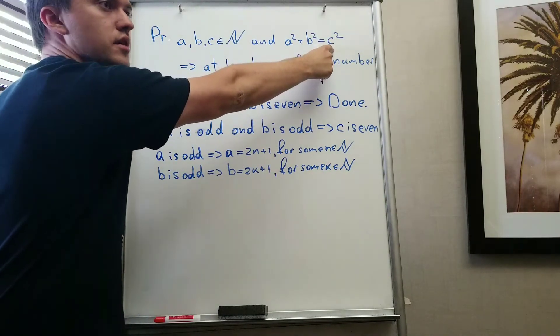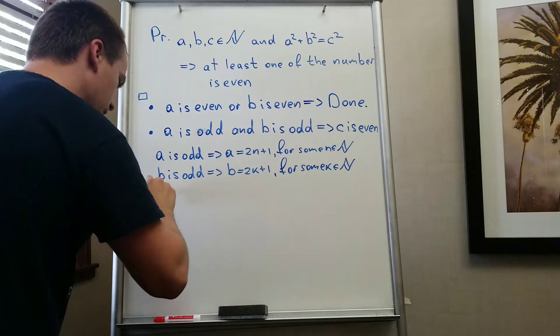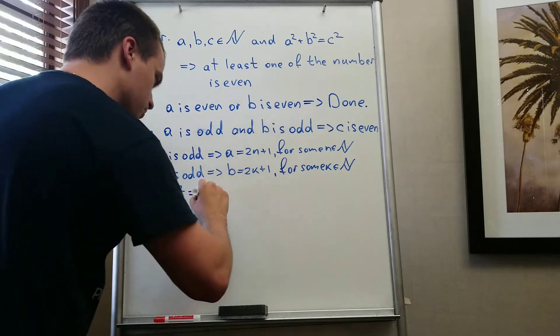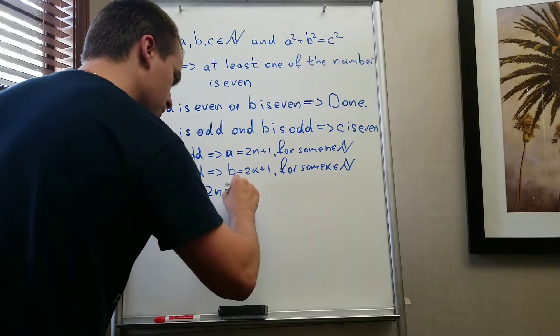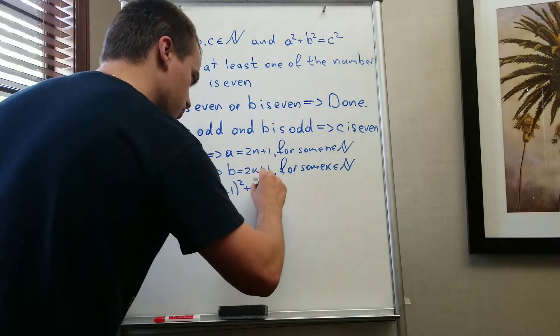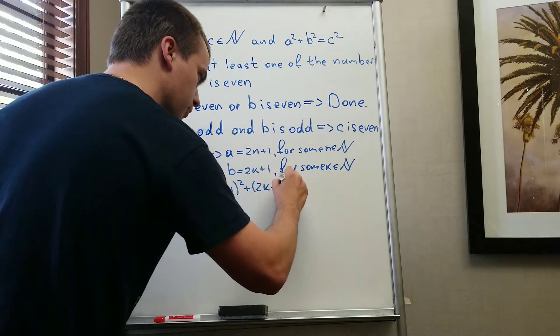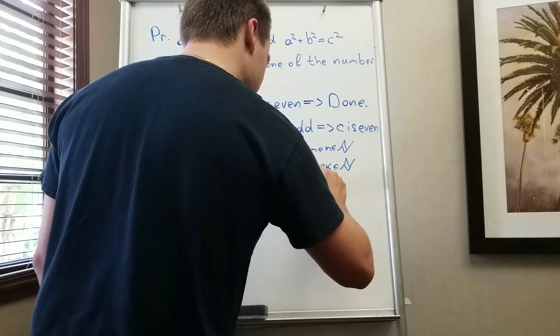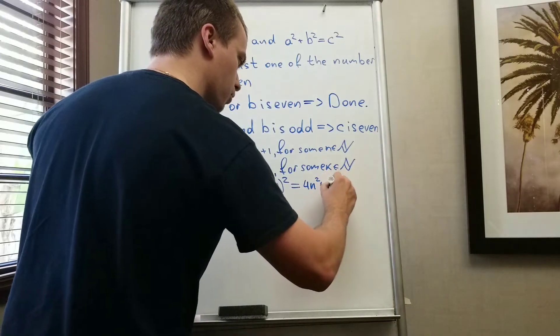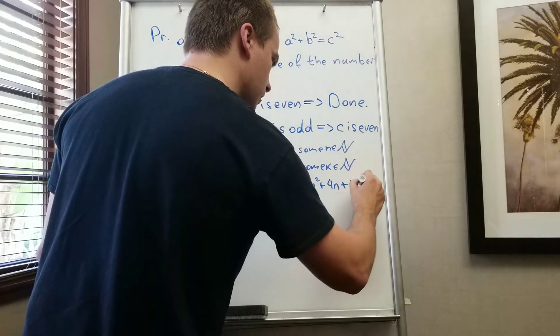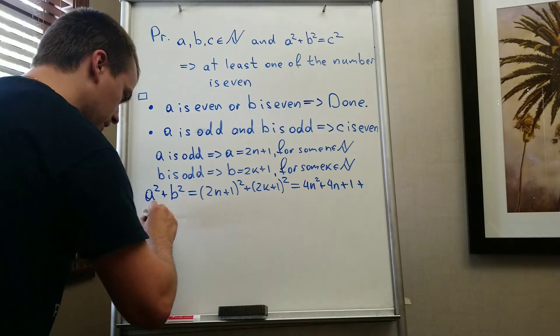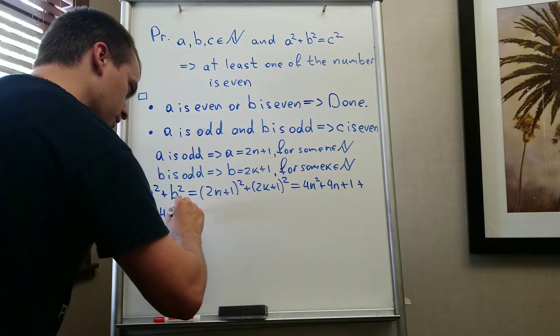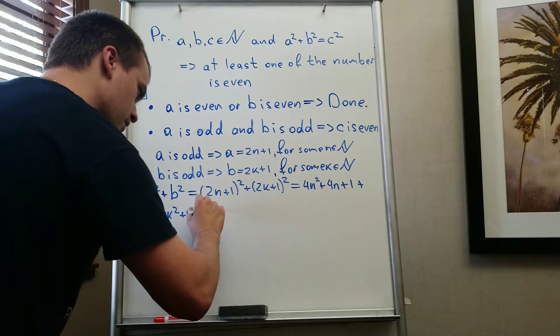So let's write a squared plus b squared. I will get it equals to 2n plus 1 squared plus 2k plus 1 squared. And after this I will get 4n squared plus 4n plus 1 plus 4k squared